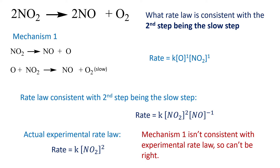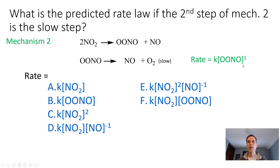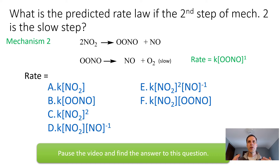Now go through the same process for mechanism two: if the second step is the slow step, what is the predicted rate law? The second step's rate law contains the intermediate OONO, so we need to eliminate it. If the second step is slow, the first step is fast and at equilibrium — use the forward and reverse rates of that first step to solve for [OONO] and substitute back. Pause the video and answer in D2L.